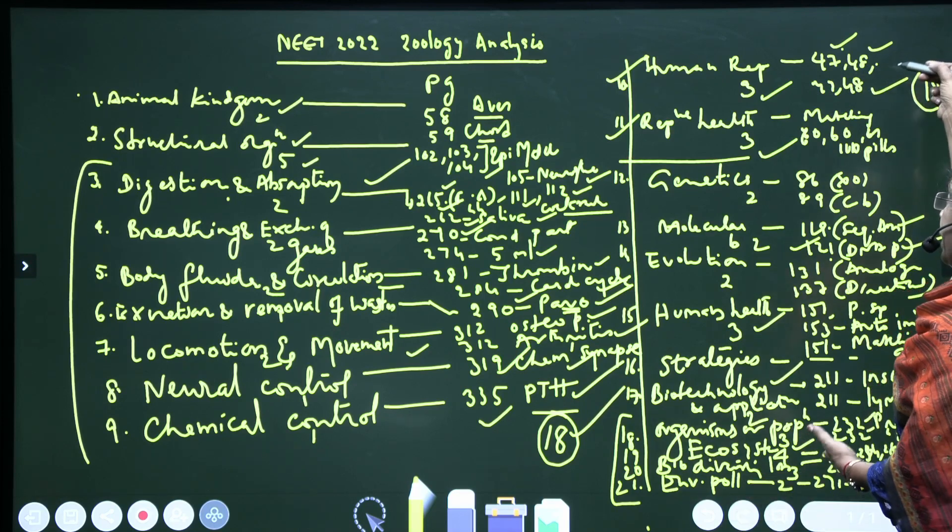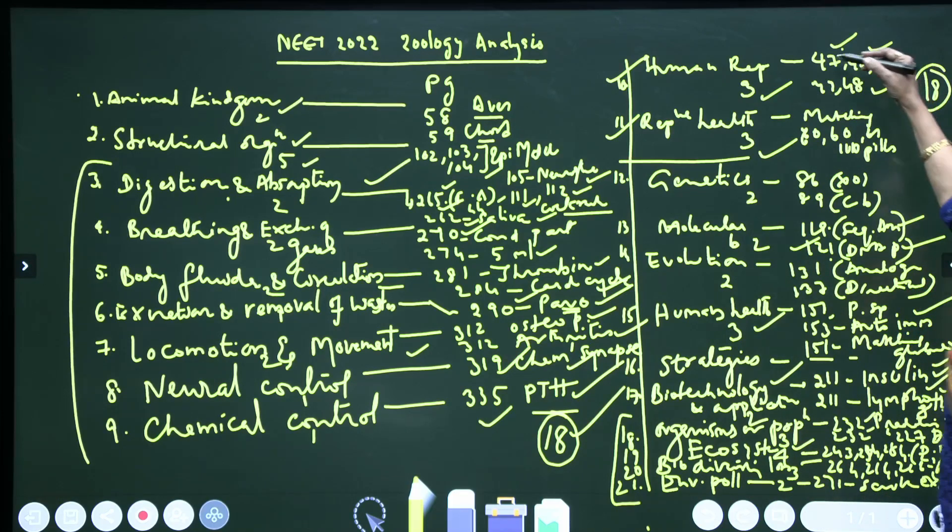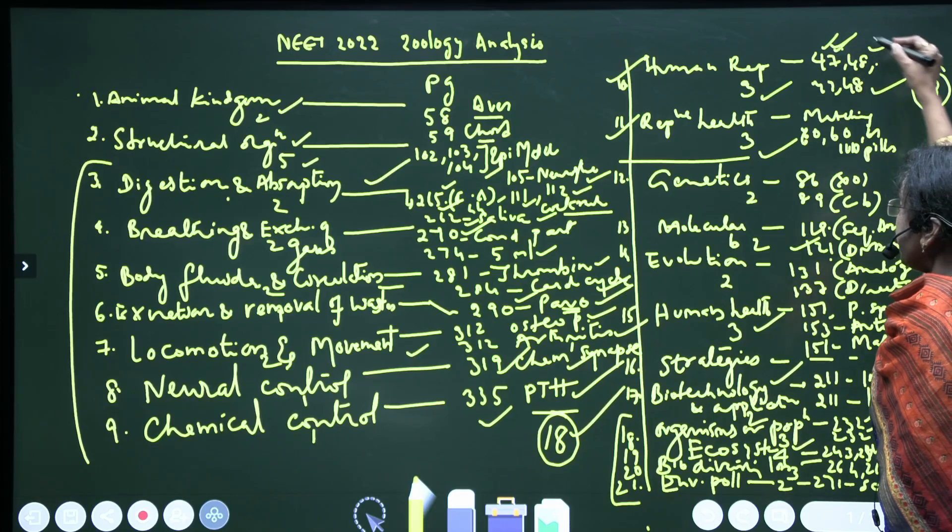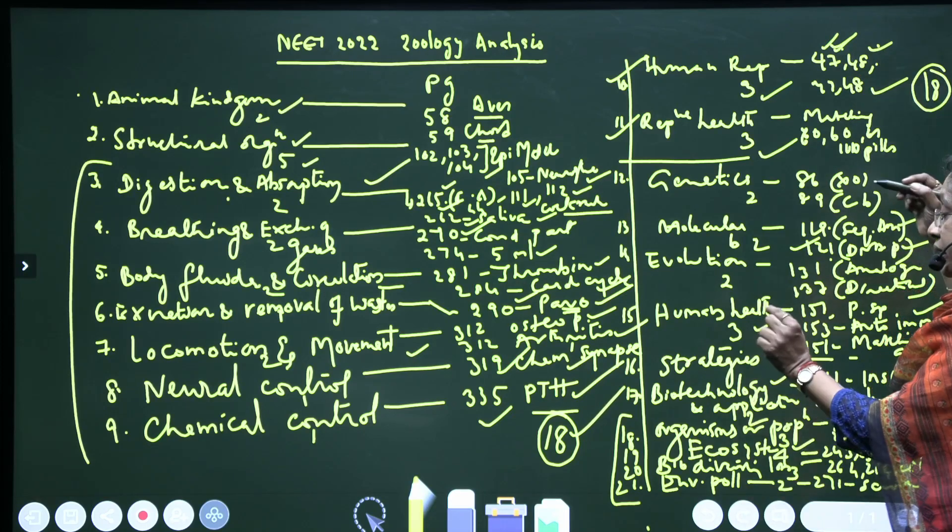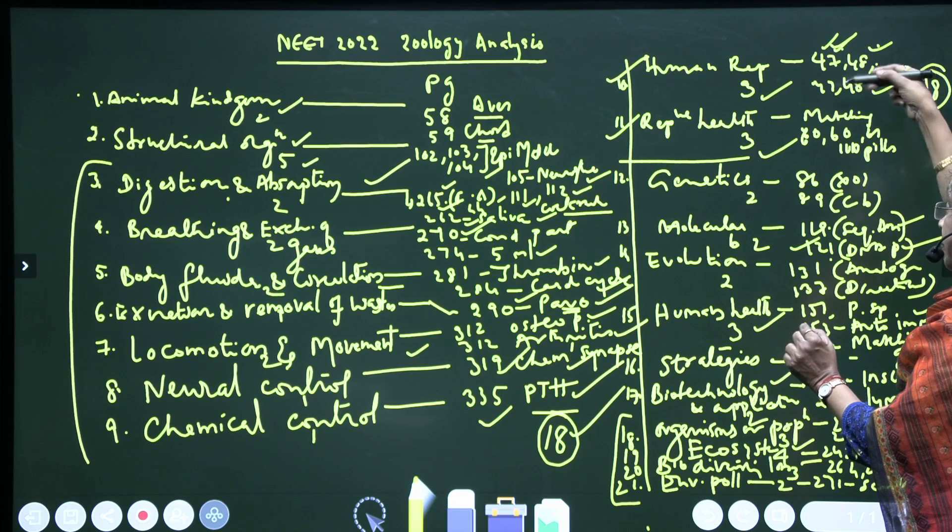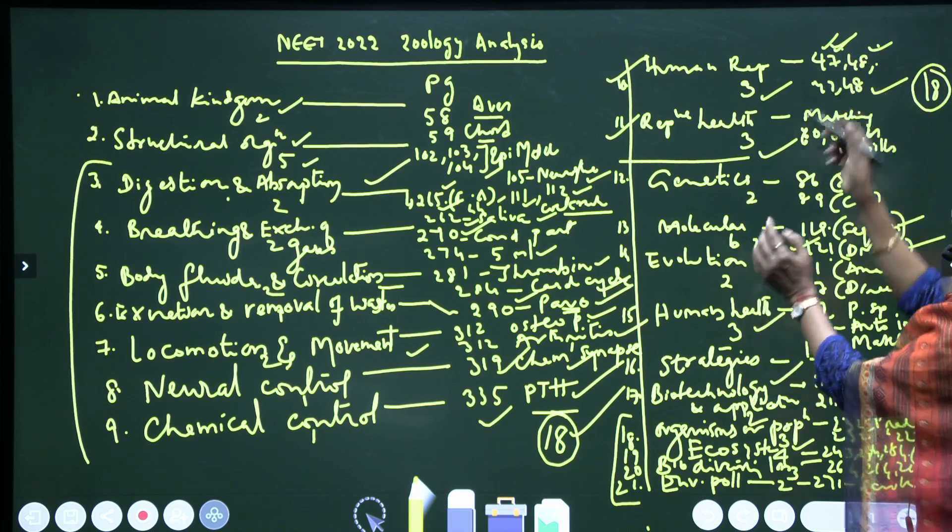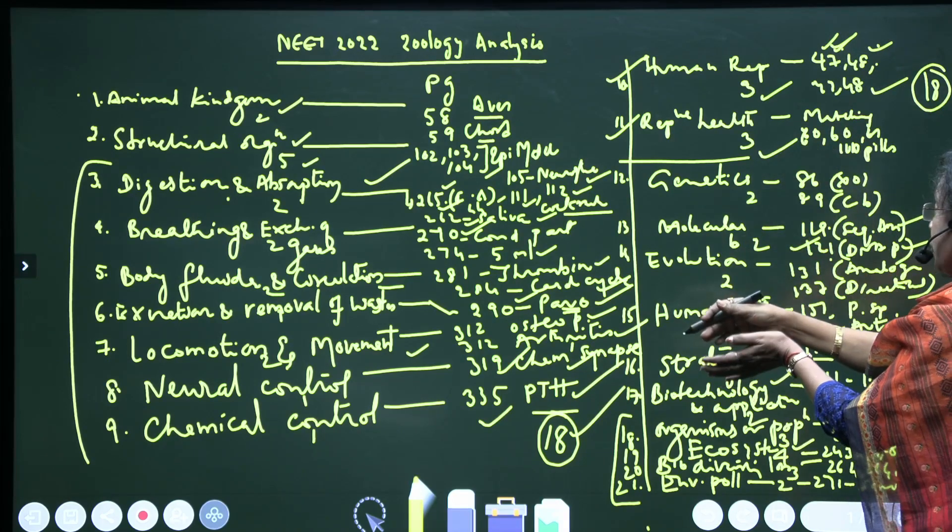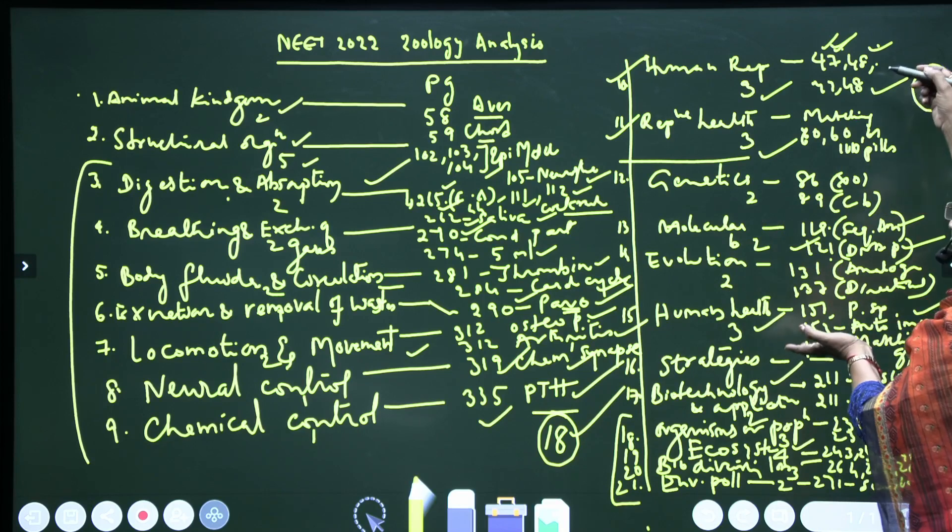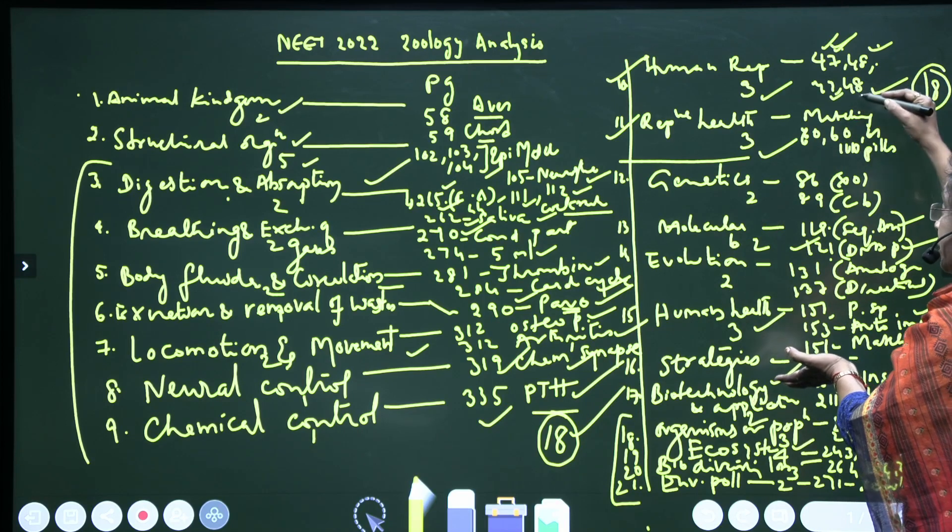Regarding gametogenesis: spermiation, spermiogenesis - that is the release of sperms from seminiferous tubules. Spermiation is from spermatid to sperm. Next oogenesis in embryonic states, and coming to spermatogenesis and oogenesis, two statements are given. So three questions directly from NCERT.